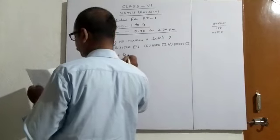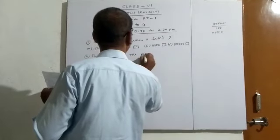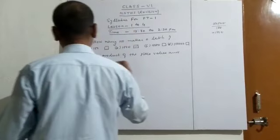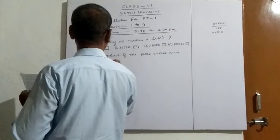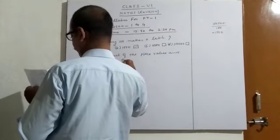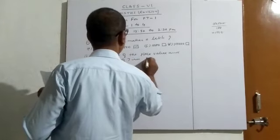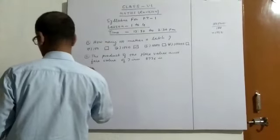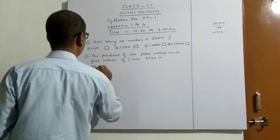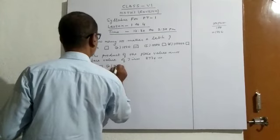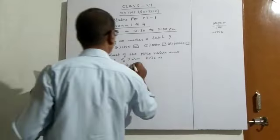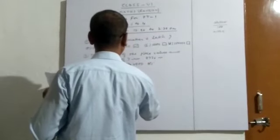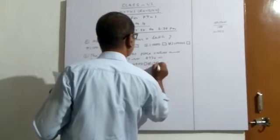Question number two. Find the product of the place value and face value of 7 in 87,36 inch. Now here are 4 options. A, 700. B, 4200. C, 4900. And D, this is 7,000.